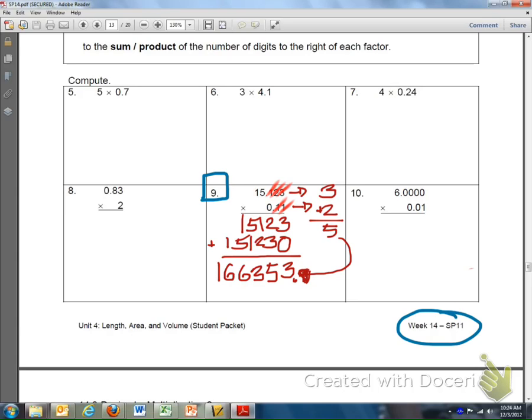So we start off with our decimal point. We move it 1, 2, 3, 4, and 5 spaces.